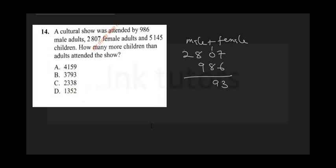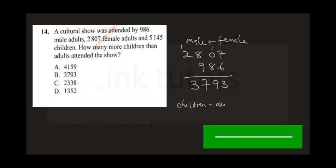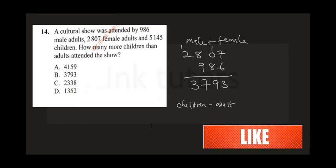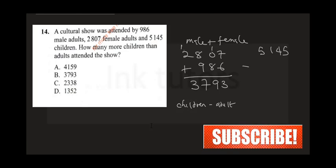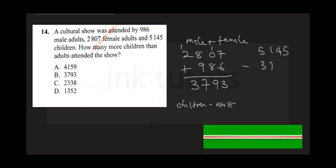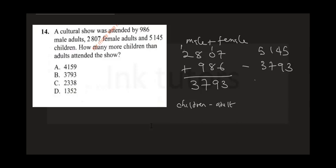7 plus 6 is 13, carry a 1. 8 plus 9 is 17, carry 1 — giving us 3793. Now to get how many more children attended, we calculate children minus adults: 5145 minus 3793.